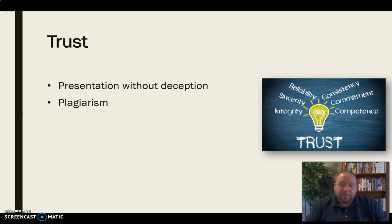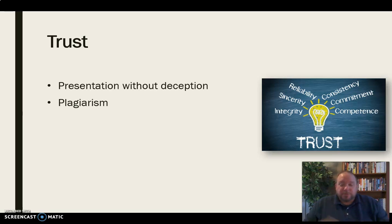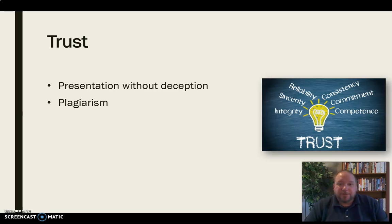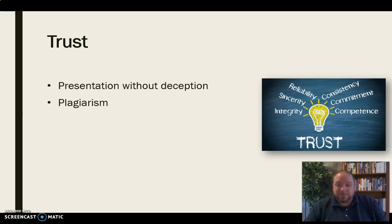Plagiarism is obviously a very important topic in higher education. There are obvious forms of plagiarism most people know about: when you take something, copy it off the internet, present it as your own, and don't give credit — that's intentional plagiarism. But even when we find a source, a book, a journal article, and we include it but fail to cite that source in our paper or presentation, that is also plagiarism, whether it was intentional or not.